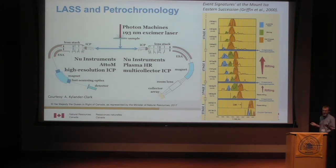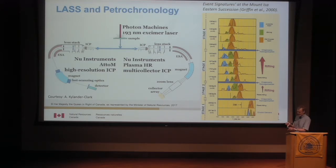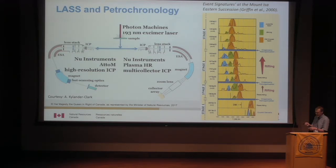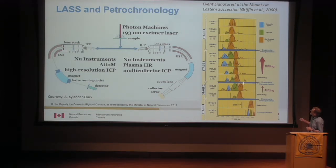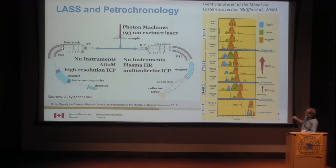By analyzing zircons for their trace elements, uranium-lead ages, and hafnium isotopes, you can collect detrital zircons from a stream sediment and almost piece together the tectonomagmatic history of the drainage basin based on those different types of information.